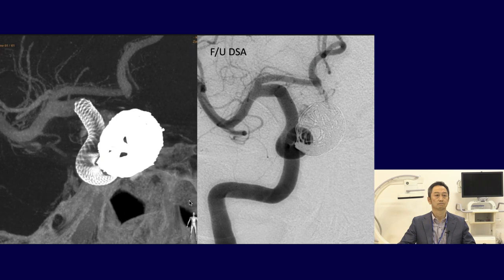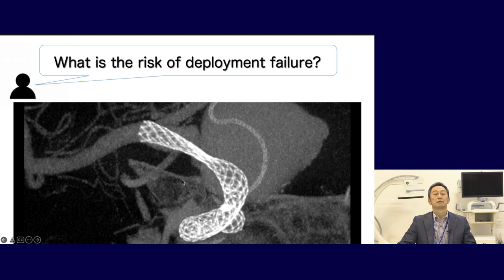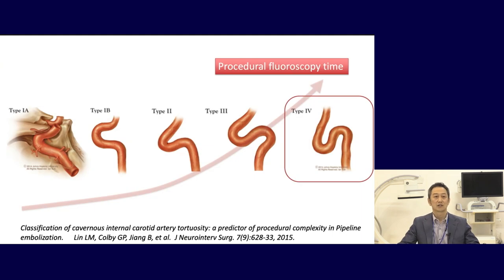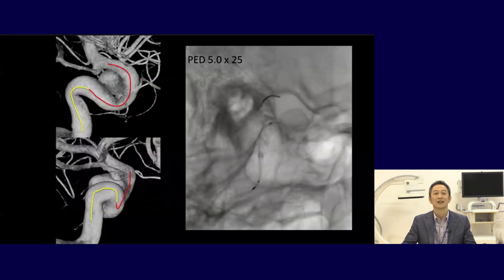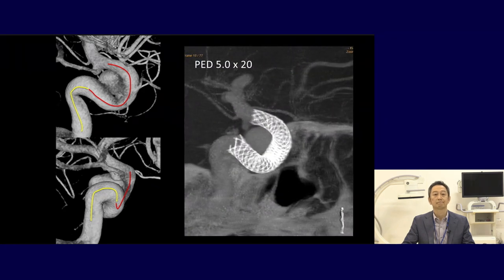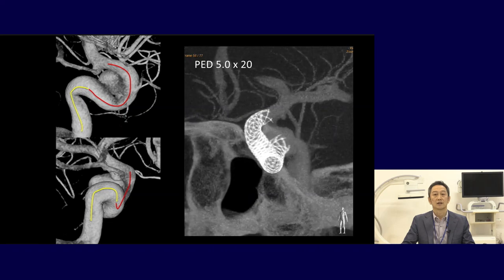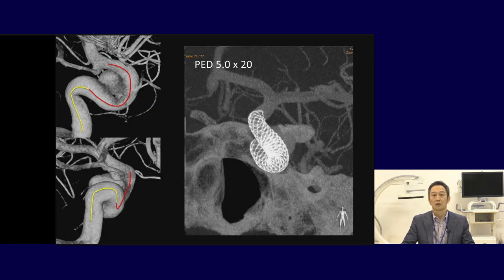What is the risk of deployment failure? Type 4 vessel configuration is the most difficult pattern because pushing power cannot transmit distally — like a Shaman's catheter. In such cases, the distal access catheter should be advanced as far distally as possible, at least beyond the posterior genu. In Type 4 cases, larger size and longer length are risks of deployment failure. In one case, I couldn't open the stent at the proximal bend of the cavernous portion, so I changed to a shorter one and deployed in one curve. Two-curve deployment might cause twisting or flattening of the stent.